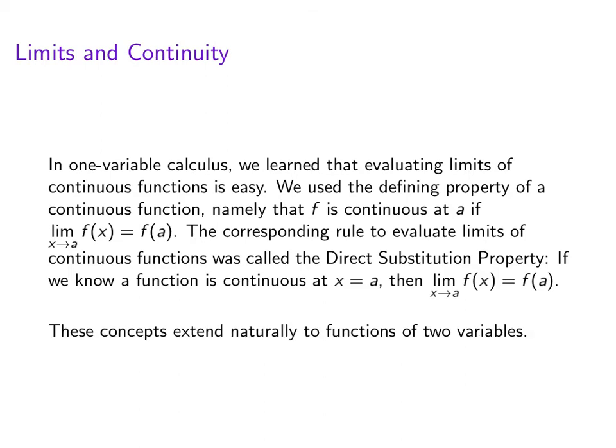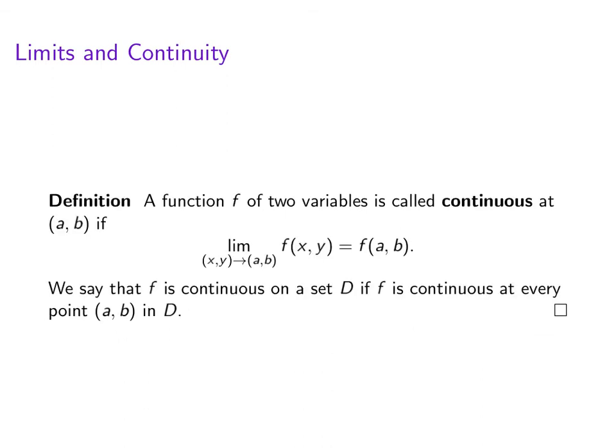Now all these concepts extend very naturally to functions of two variables. So we'll say that a function of two variables is called continuous at (a,b) if the limit as (x,y) approaches (a,b) of f(x,y) is equal to f(a,b).